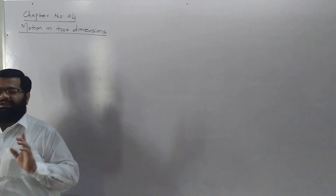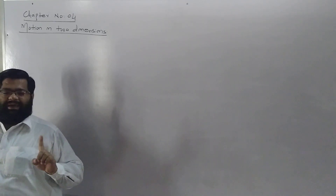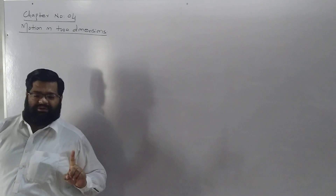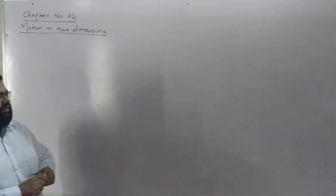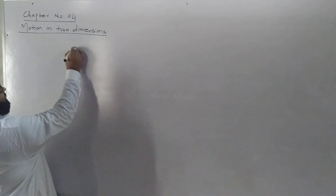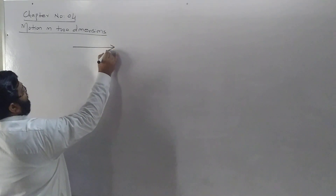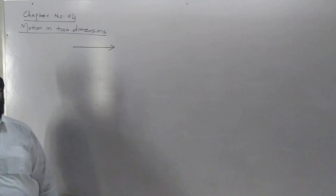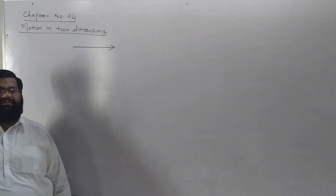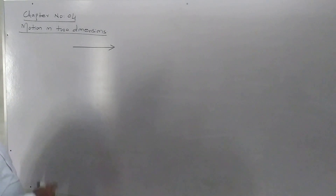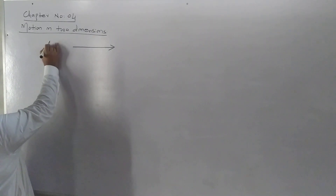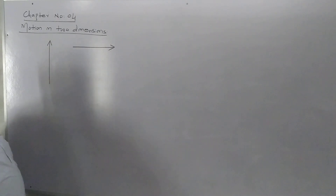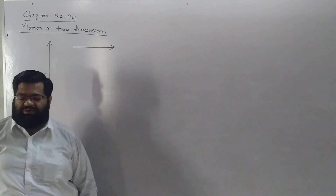Motion in one dimension means one direction. Suppose for example your body is just moving along the x-axis only, meaning y-axis equals zero. Or suppose your body is just moving along the y-axis, then x-axis equals zero.